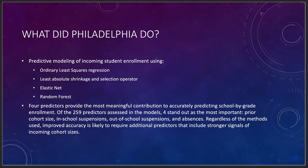Philadelphia did predictive modeling of incoming student enrollment using four different methods: ordinary least squares regression, a least absolute shrinkage and selection operator (LASSO), elastic net, and random forest. They used 259 predictors in their data models, and out of those four predictors stood out as most important: prior cohort size, in-school suspensions, out-of-school suspensions, and absences.